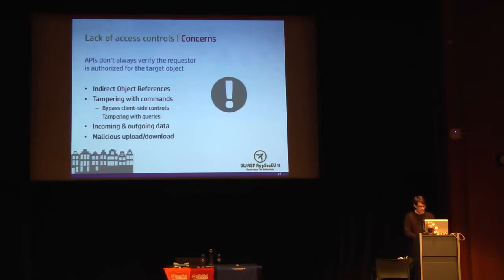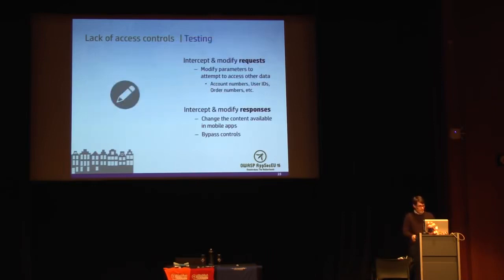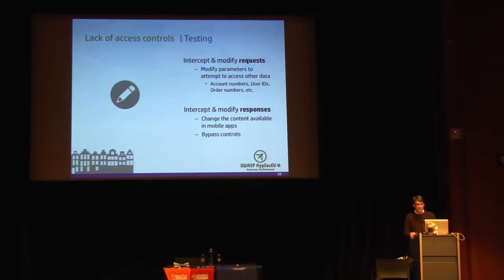For testing tampering and access controls: intercept and modify requests, modify all parameters just as you would in traditional web testing, attempt to enumerate through account numbers, user IDs, and order numbers. Don't just stop with requests — also intercept and modify responses, particularly in mobile applications. By changing responses in a mobile application, you can get the client to behave differently, potentially exposing admin functionality. Tools like ZAP have fuzzers built in where you can create injection points in REST-based services.